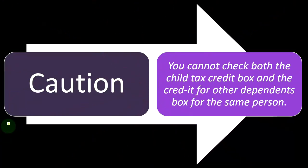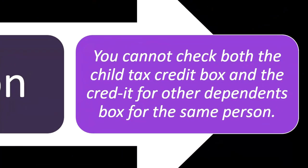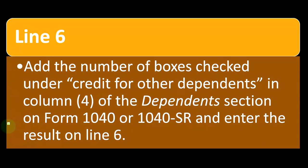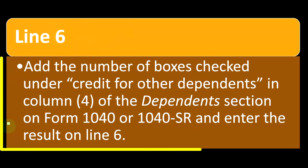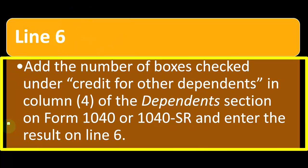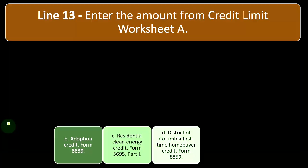Caution: you cannot check both the child tax credit box and the credit for other dependents box for the same person. If you do that, it would be a big red flag to the IRS and there could be a delay on the return. Line number six: add the number of boxes checked under 'credit for other dependents' in column four of the dependents section on Form 1040 or 1040-SR, and enter the result on line six.